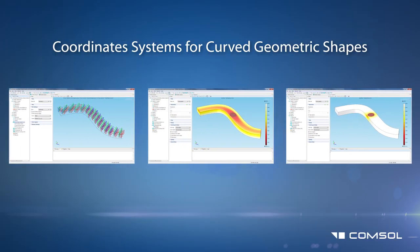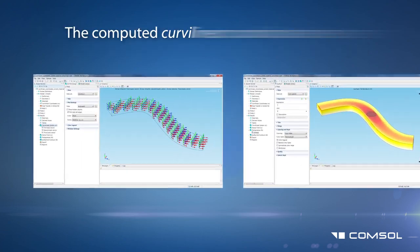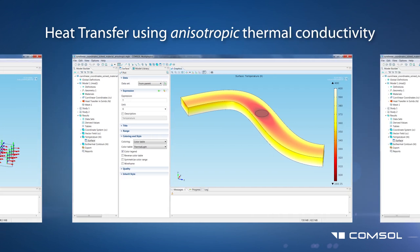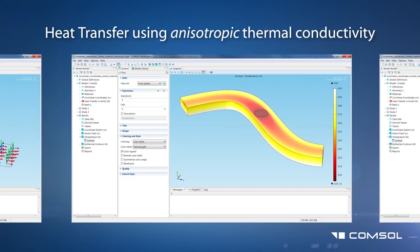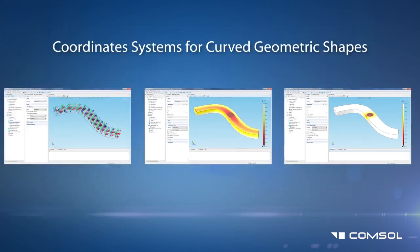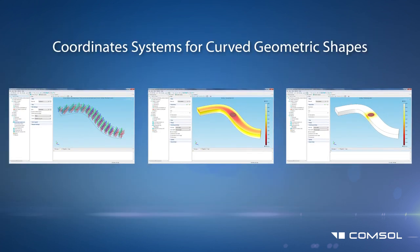Also now built into COMSOL Multiphysics is the ability to create coordinate systems for curved geometric shapes, ideal for applications such as defining orthotropic materials in structural mechanics analyses, or anisotropic properties for thermal conductivity or electromagnetic media. This feature is automated and provides three different methods depending on the requirements of the created coordinate system.